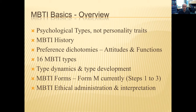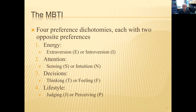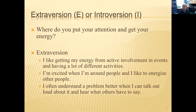The four preference dichotomies each have two opposite preferences: energy — extroversion or introversion; attention — sensing or intuition; decisions — thinking or feeling; and lifestyle — judging or perceiving. You can see extroversion items here as to where you put your attention and get your energy.